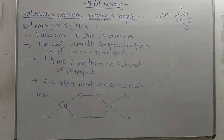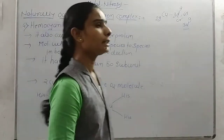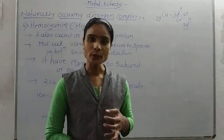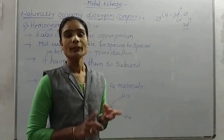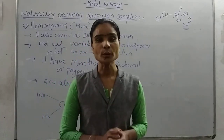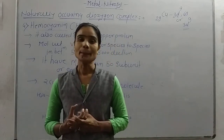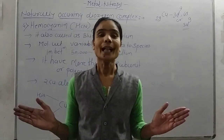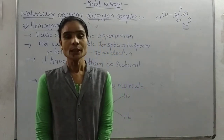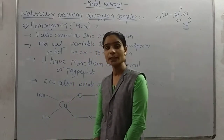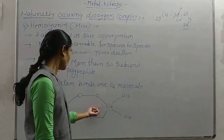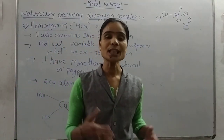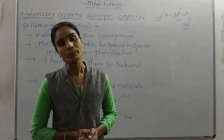Hemocyanin acts as an oxygen carrier. All four naturally occurring dioxygen complexes are: first, hemoglobin; second, myoglobin; third, hemerythrin; and fourth, hemocyanin. The first two — hemoglobin and myoglobin — are heme proteins with iron-porphyrin rings. The last two — hemerythrin and hemocyanin — are non-heme proteins with no iron-porphyrin ring. Hemerythrin has two iron atoms attached to one oxygen molecule, and hemocyanin has two copper atoms attached to one oxygen molecule. In the next lecture, we will see the differences between these naturally occurring dioxygen complexes. Thank you so much for watching.